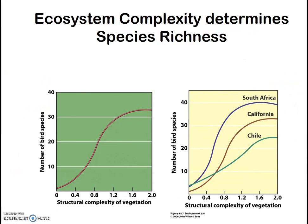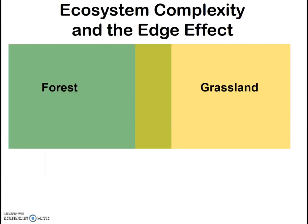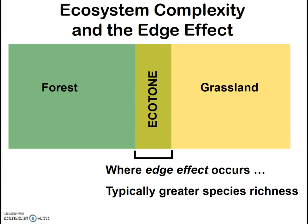Ecosystem complexity is what determines species richness. The more variable and complex the ecosystem is, the higher the number of potential niches available, and so the more species you will likely have. Additionally, when you have edges present between different types of ecosystems, this is where you really get a lot of species richness. This region at the edge of two ecosystems is called the ecotone. So by draining the Everglades and creating basically only two distinct ecosystems — dry or channeled water — you dramatically decreased the complexity of vegetation, the complexity of the ecosystem, and thus the species richness of the whole area.